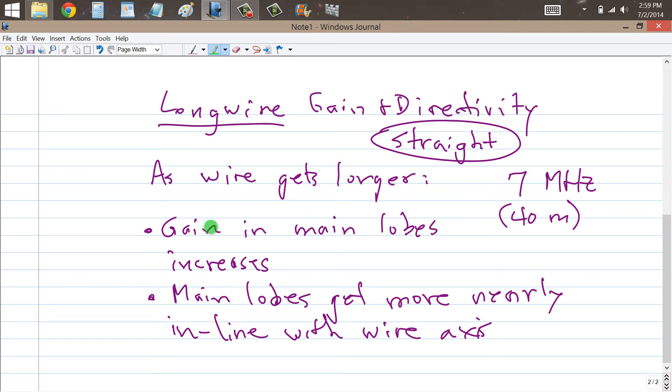As you lengthen the wire, you get gain. And that gain occurs in main lobes that exist in the form of cones around the wire axis. Those main lobes get sharper and sharper and more and more intense as you increase the wavelength, particularly past one wavelength.